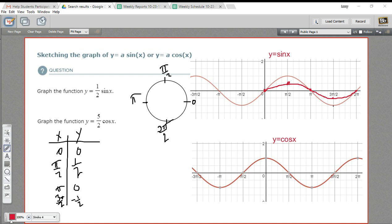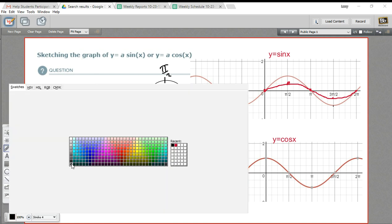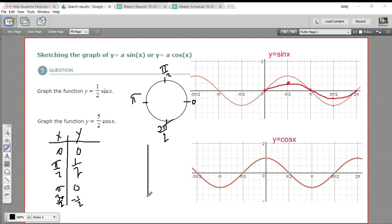For 5 halves cosine, we're going to do something pretty similar. We'll make that chart again, and then we'll just plot it out.